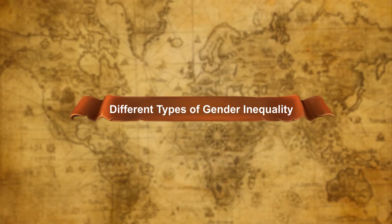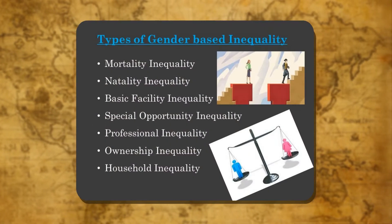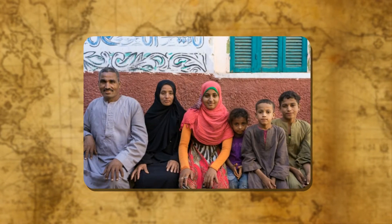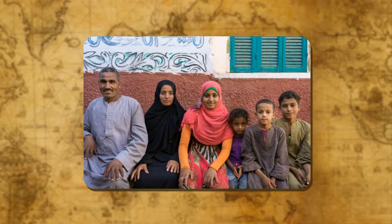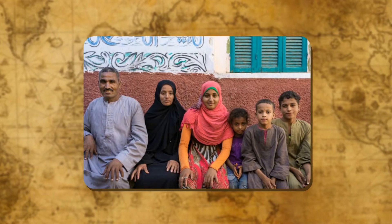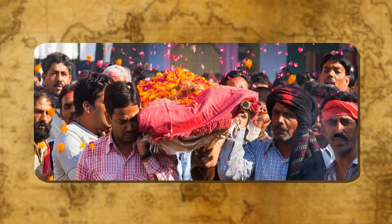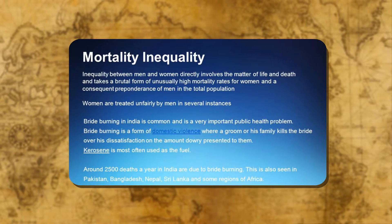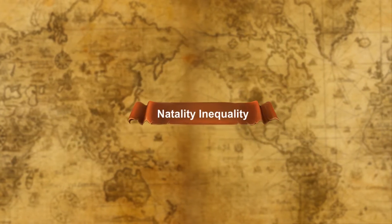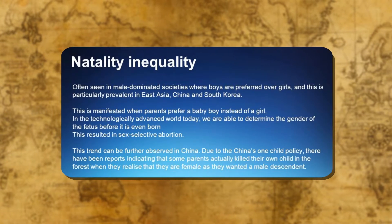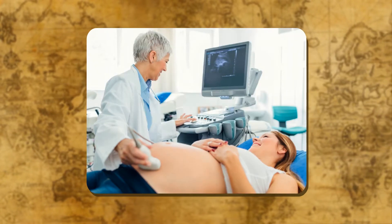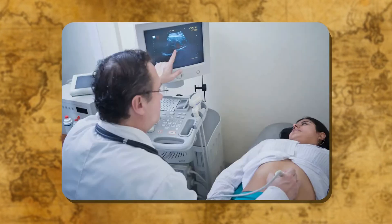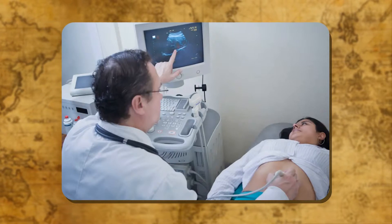There are seven types of gender inequality. Mortality inequality: In some regions of the world, inequality between women and men directly involves matters of life and death and takes the brutal form of unusually high mortality rates of women and a consequent preponderance of men in the total population. Natality inequality: There was a time when this could be no more than a wish, but with the availability of modern techniques to determine the gender of the fetus, sex-selective abortion has become common in many countries.